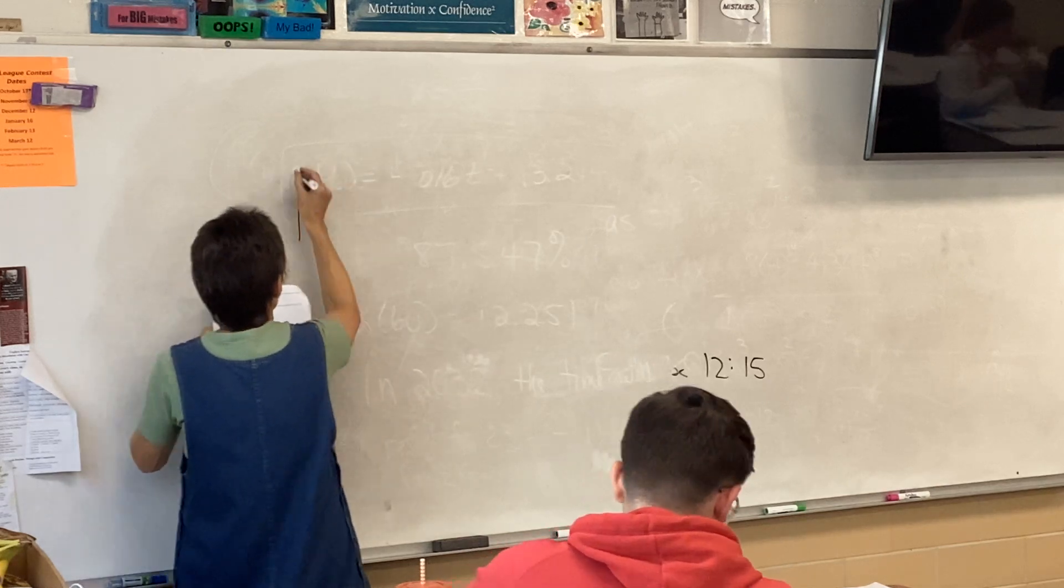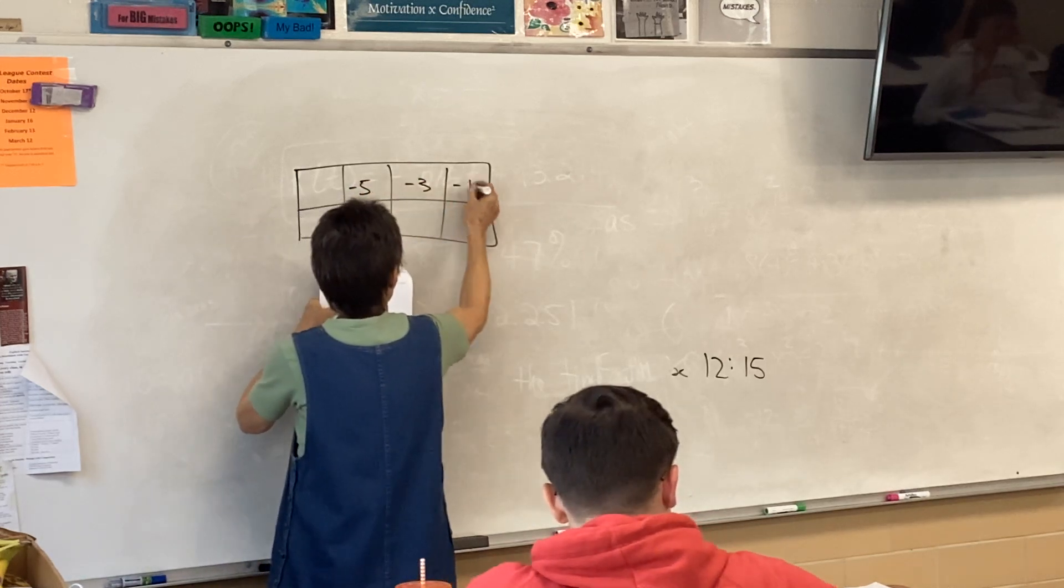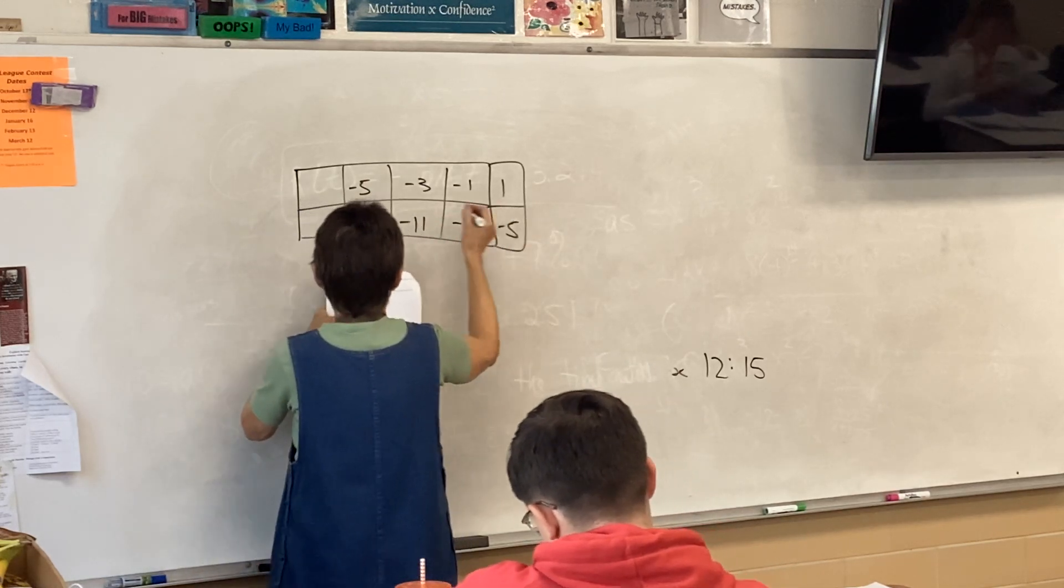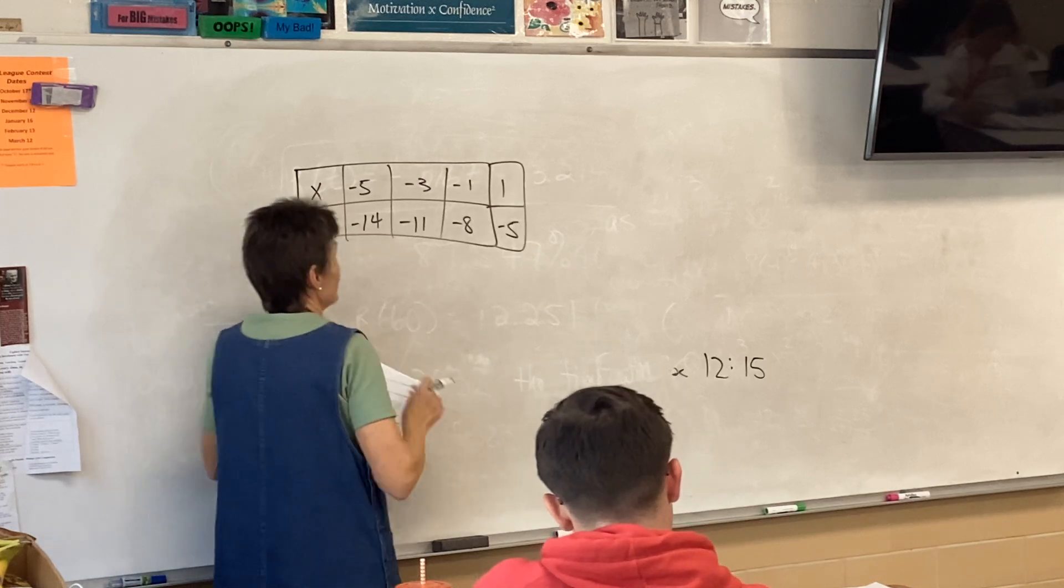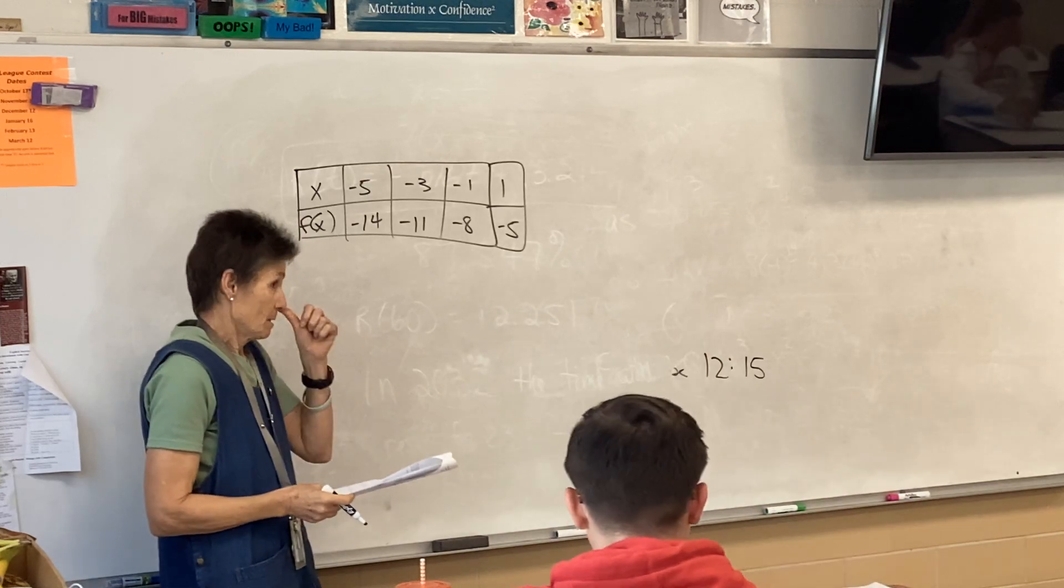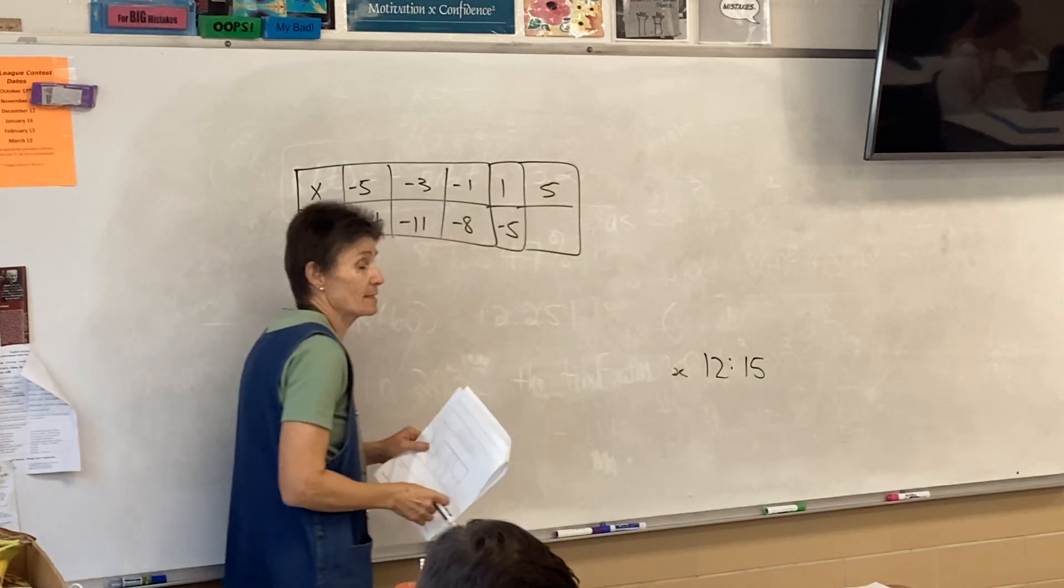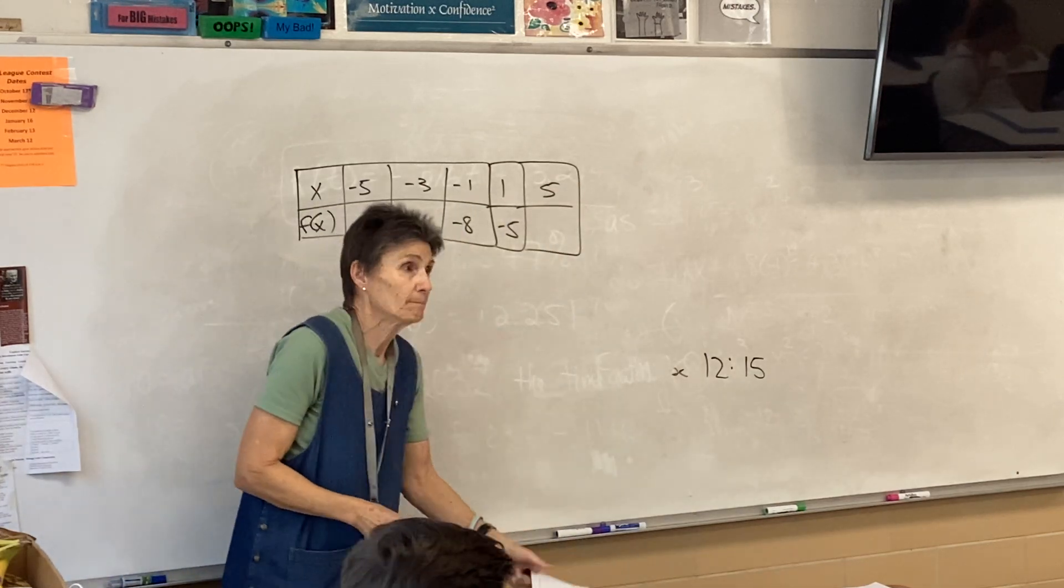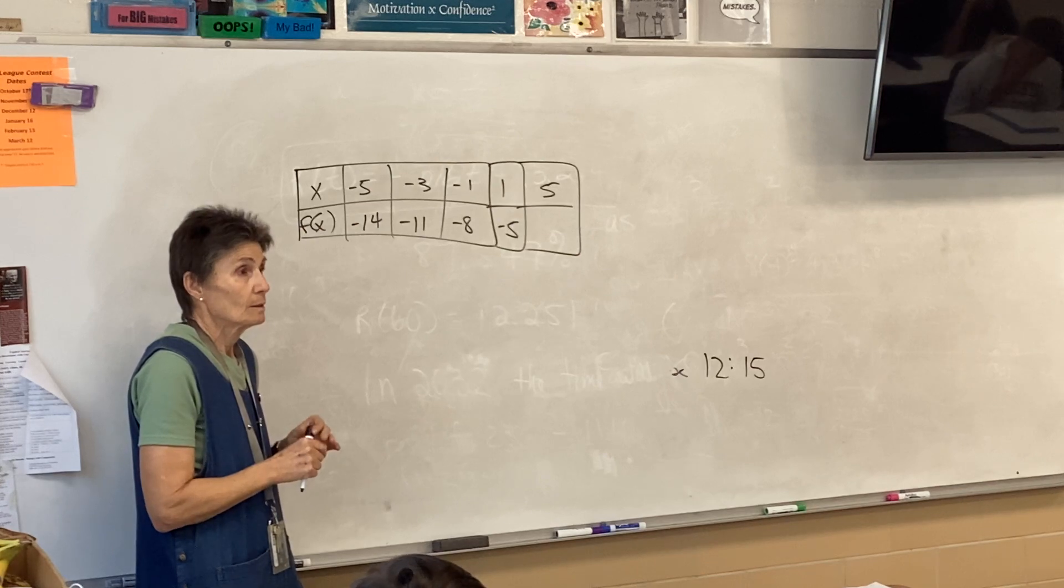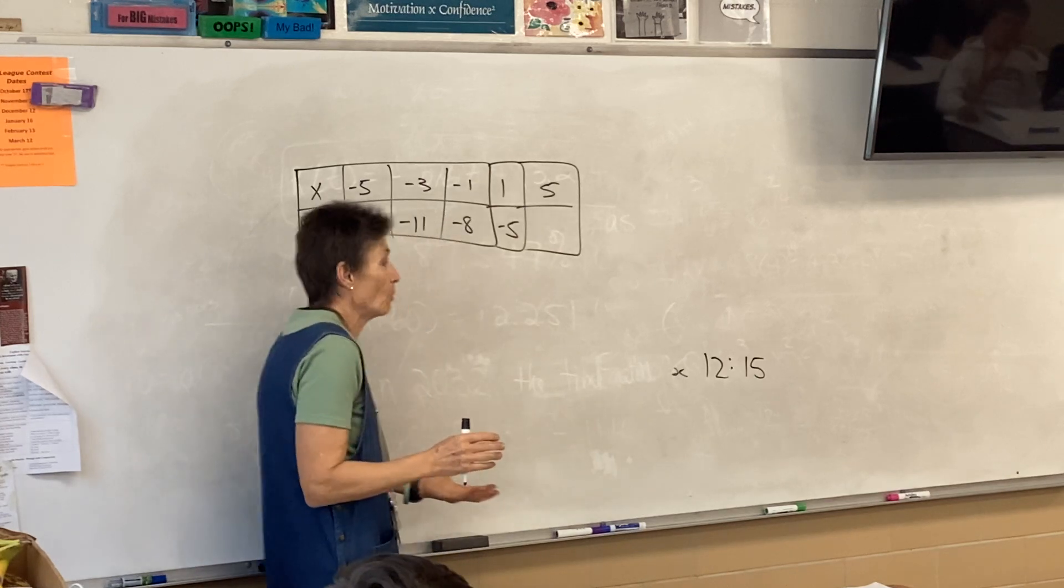F has, this is a table given. And we've got negative 5, negative 3, negative 1, 1, 2 for x, and negative 14, negative 11, negative 8, negative 5, negative 2 for y. This is a linear function, which means it is a line. And our job is to figure out what happens when x is 5. That's our question. All right, so who's got an idea? Find an equation. Find an equation.